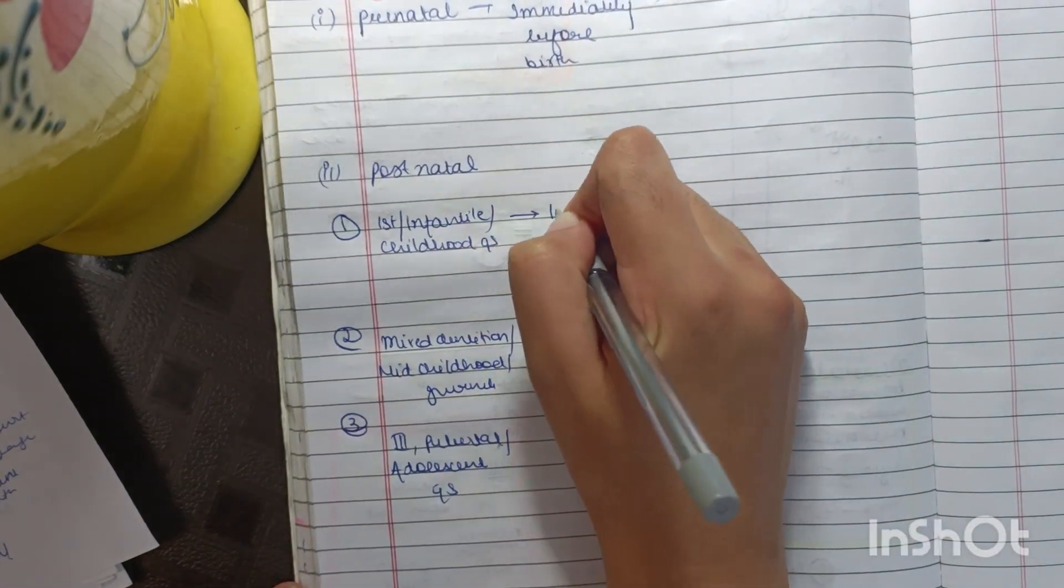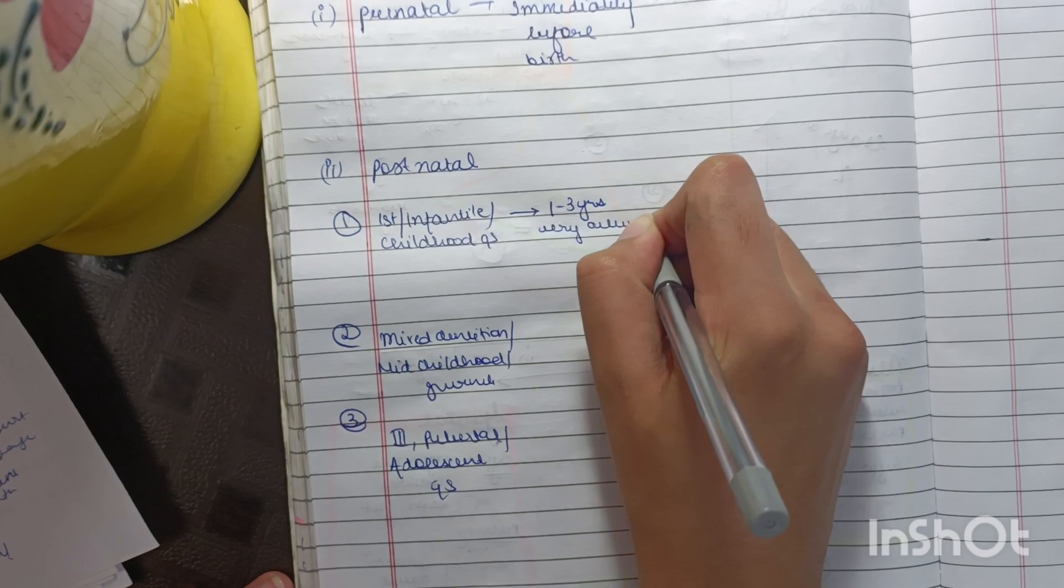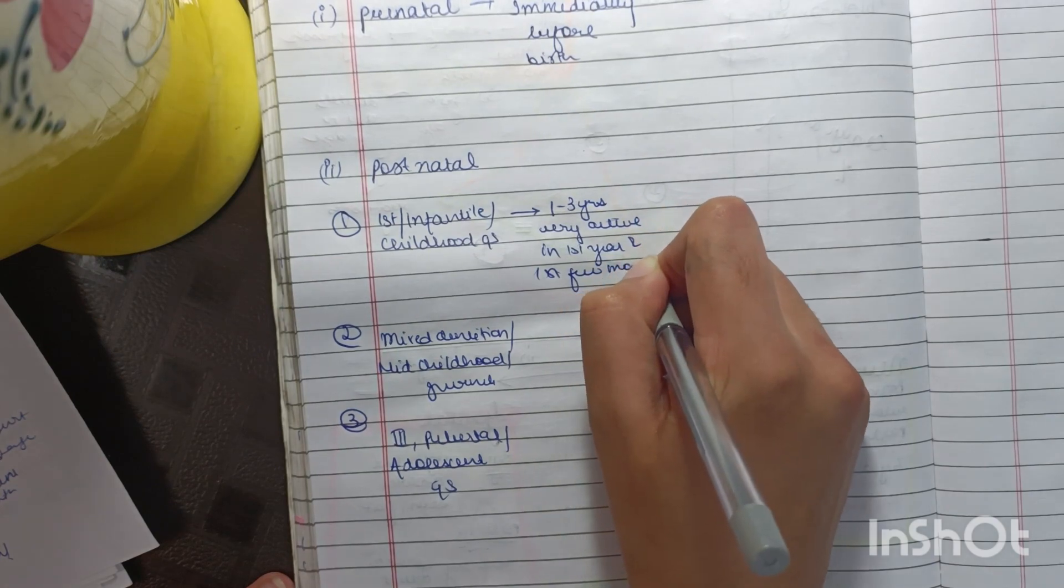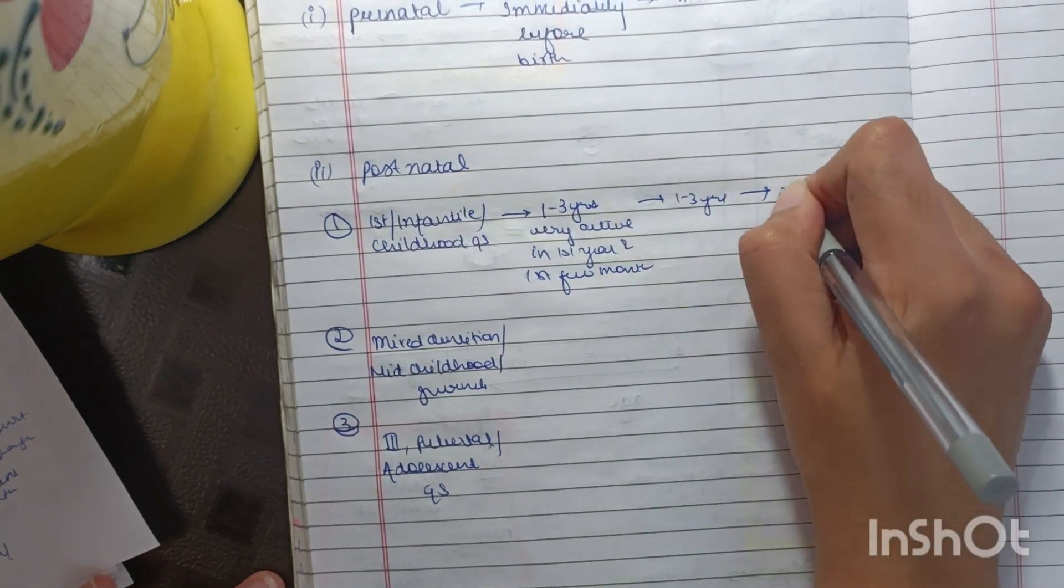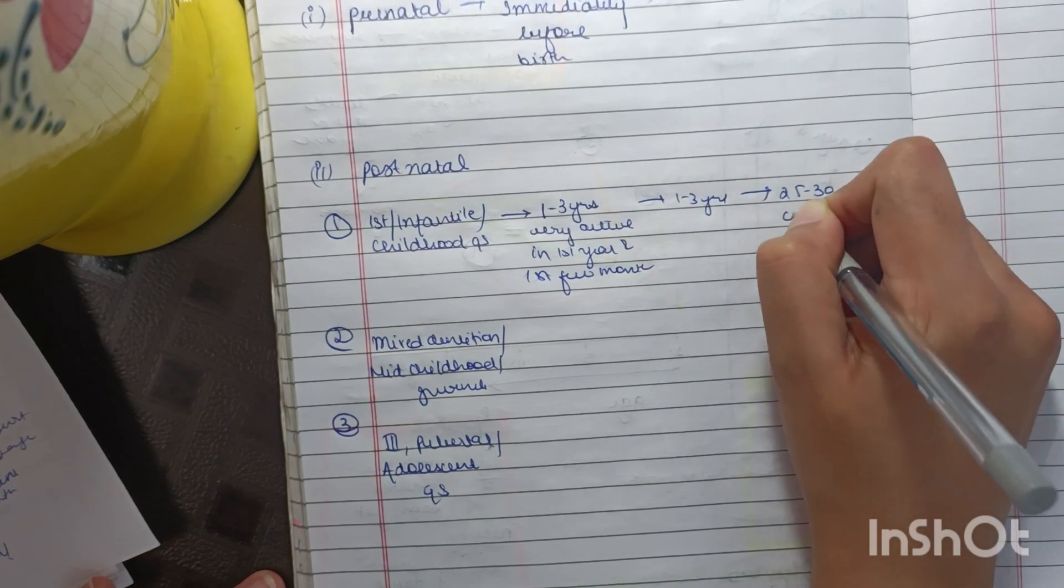Now in the infantile phase, basically one to three years of age, it is very active in the first year and first few months. In this, the maximum velocity of growth will occur, 25 to 30 cm per year growth.